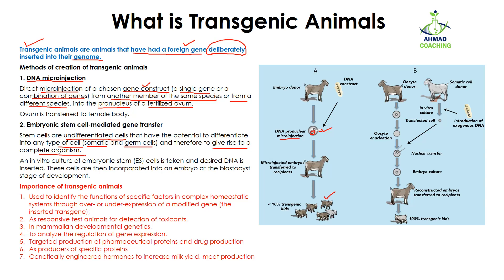What we are going to do is obtain somatic cells from a donor and culture them in vitro, meaning outside the body. After that, I am going to introduce my desired DNA into those stem cells. After that, I am going to transfer this stem cell into the nucleus of another donor's egg, because an egg is required for the development of the baby.